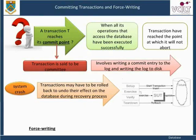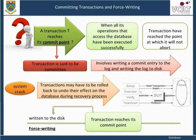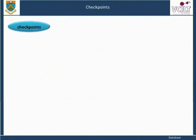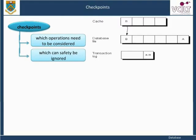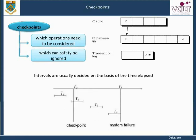Force writing is where any portion of the log that has not been written to disk yet must now be written to disk before a transaction reaches its commit point. The checkpoint entry is used to determine which operations need to be considered and which can safely be ignored. The checkpoint is written into the log periodically and always involves writing out to the database on disk the effect of all write operations of committed transactions. The recovery manager of a DBMS must decide at what intervals to take a checkpoint, usually decided on the basis of time elapsed or the number of committed transactions since the last checkpoint.